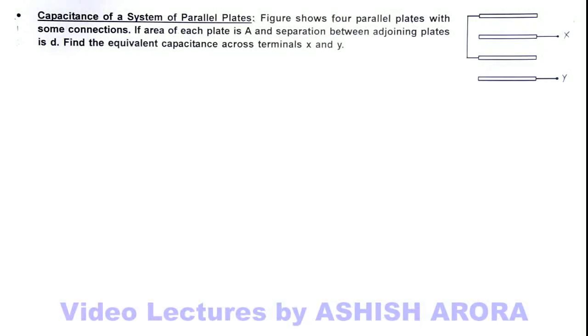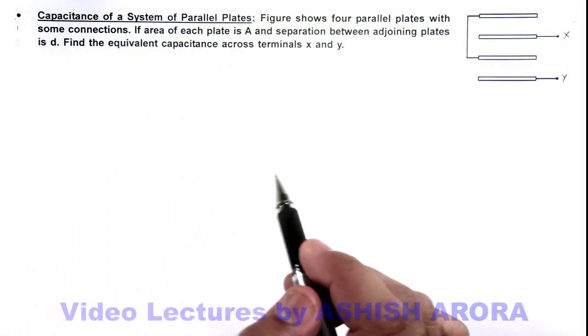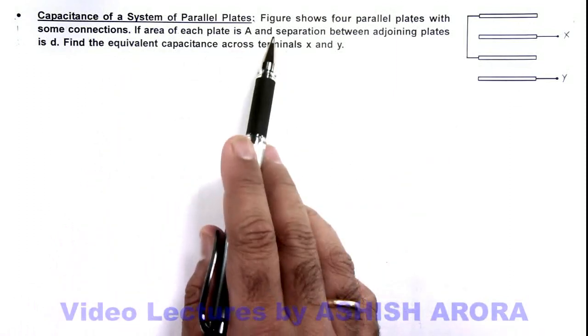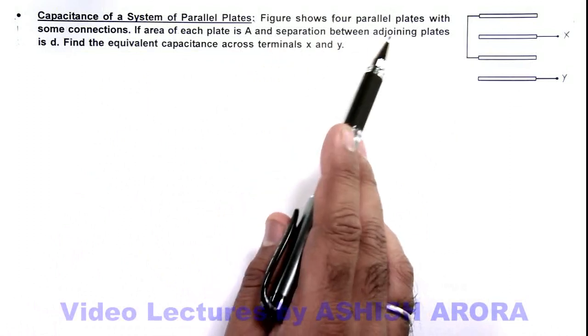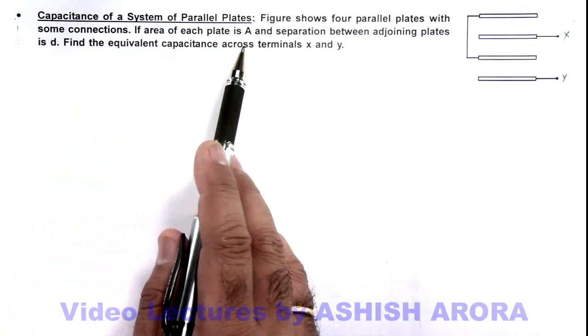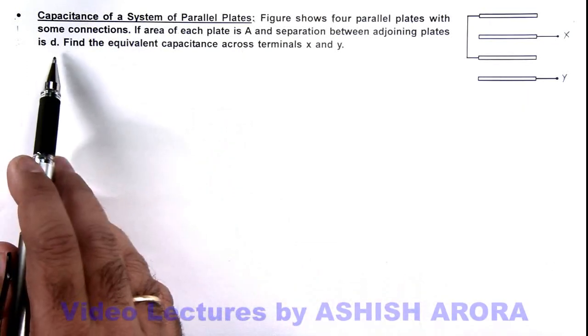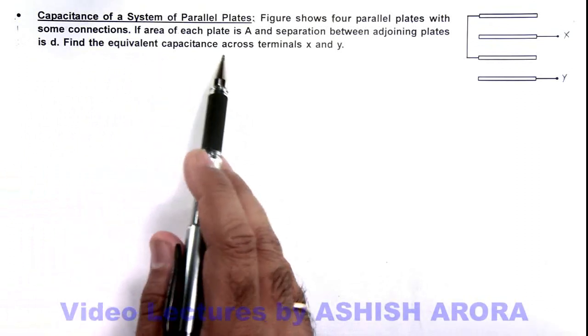In this illustration we'll study about capacitance of a system of parallel plates. Here we can see that the figure shows four parallel plates with some connections. If area of each plate is A and separation between adjoining plates is d, we are required to find the equivalent capacitance across terminals x and y.